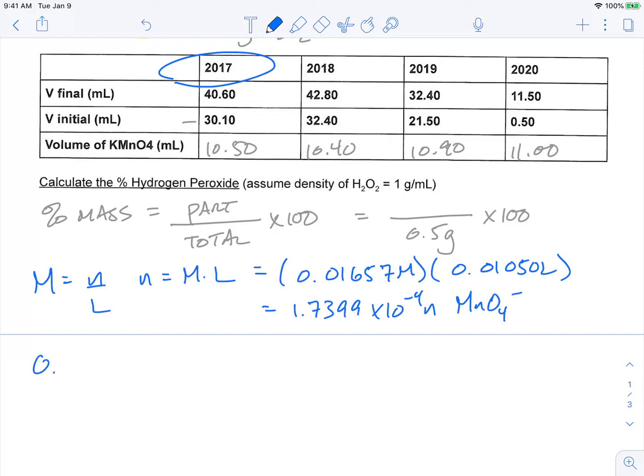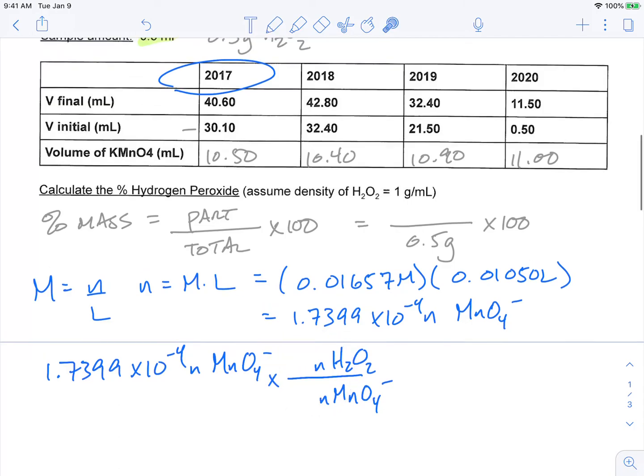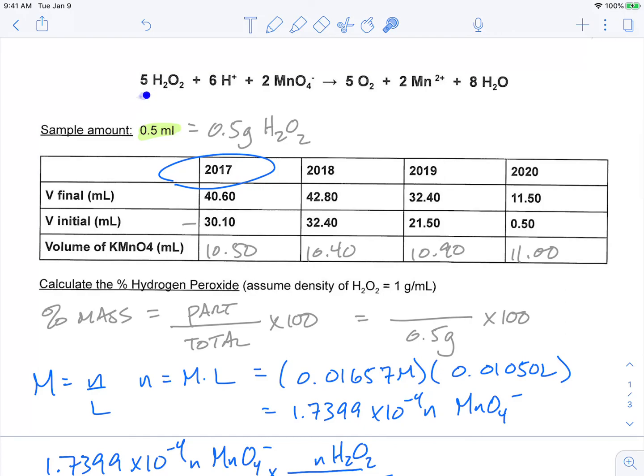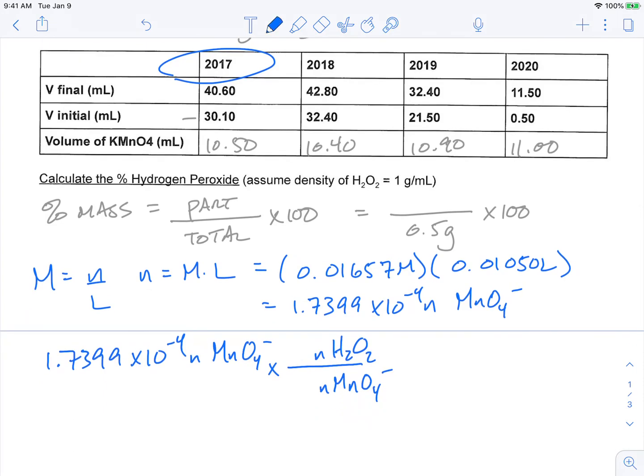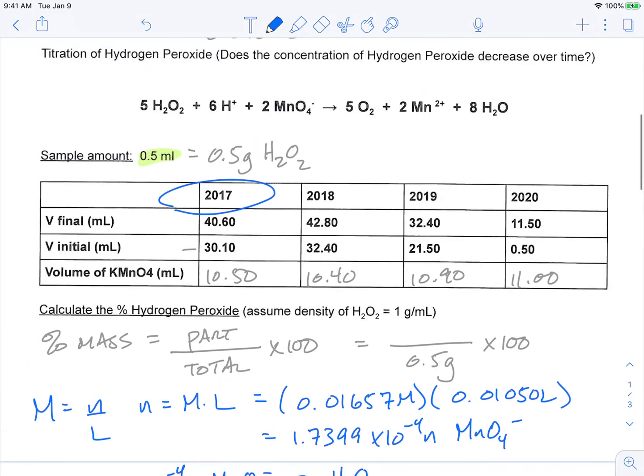And that's the moles of the MnO4-. So we can then take that value, 1.7399 × 10^-4 moles of the permanganate ion. And then using the equation, we can convert that to moles of H2O2, and then from moles into grams. So let's go ahead and do that. So looking at the equation, we can figure out the mole ratio. So in our equation, there are five moles of hydrogen peroxide for every two moles of the permanganate. So five of the hydrogen peroxide for every two of the permanganate.